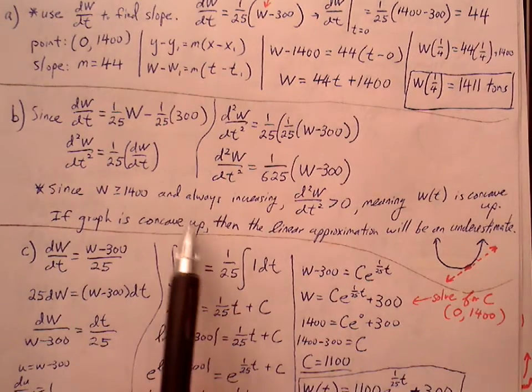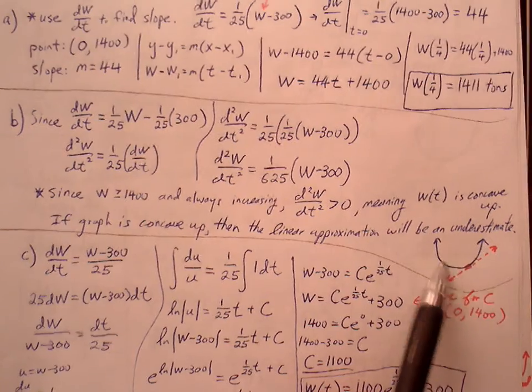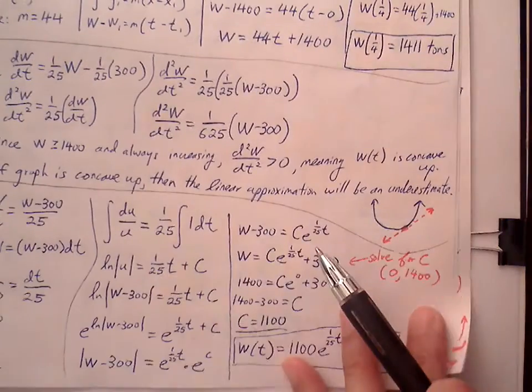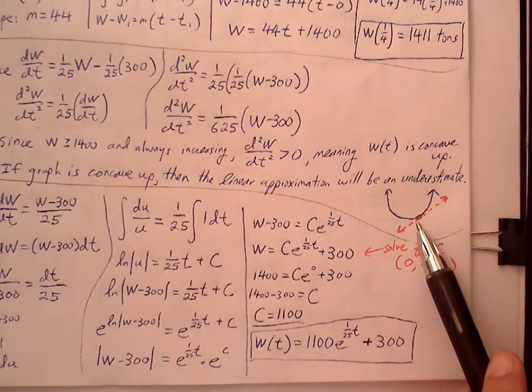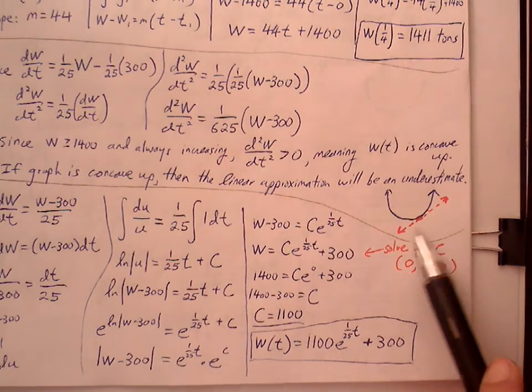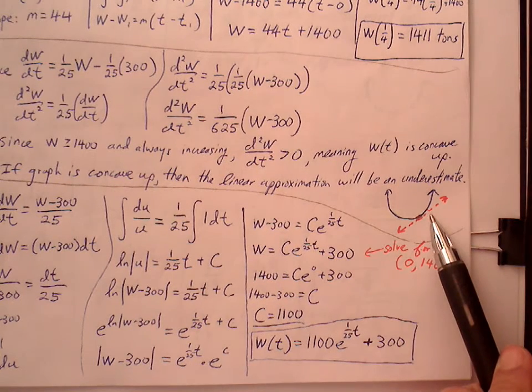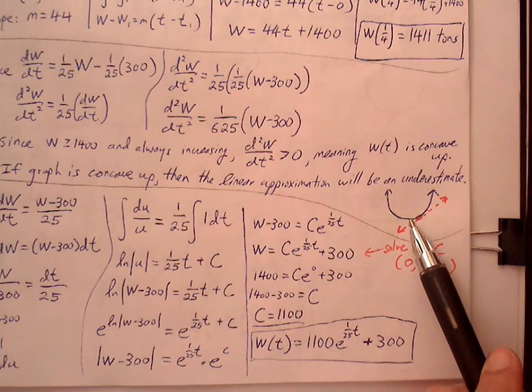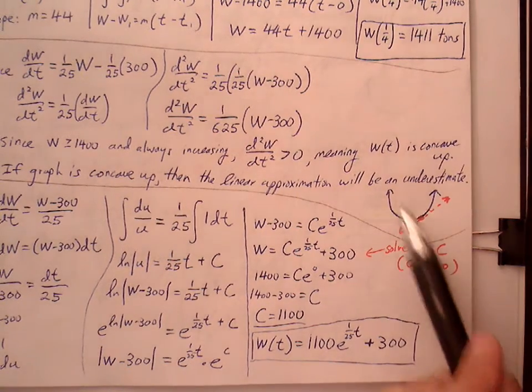So if it's greater than zero, that means our W(t) equation is always concave up. And if the graph is concave up, then this is what the graph could look like. And if our graph is concave up, our linear approximation, that is the line that's tangent to the curve, is always going to sit nicely below the curve, which means any approximation that we make with the line, the linear equation, is always going to produce an under approximation or an underestimation of the actual value on the curve.